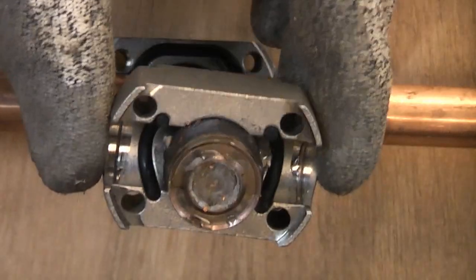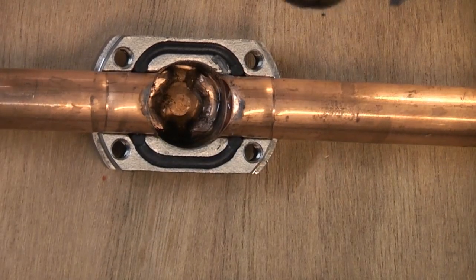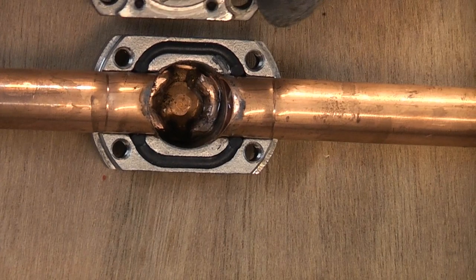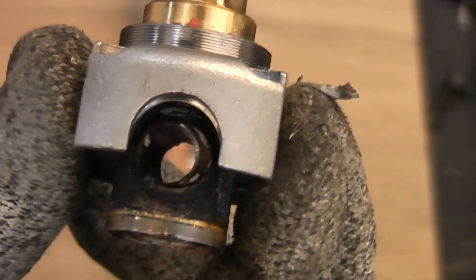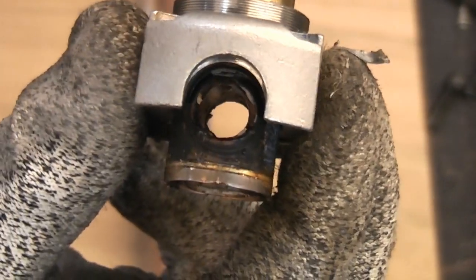So the slug cutter cuts the hole out and then pushes it right to the back of the fitting and compresses it, which then allows that port in there to be the isolator.